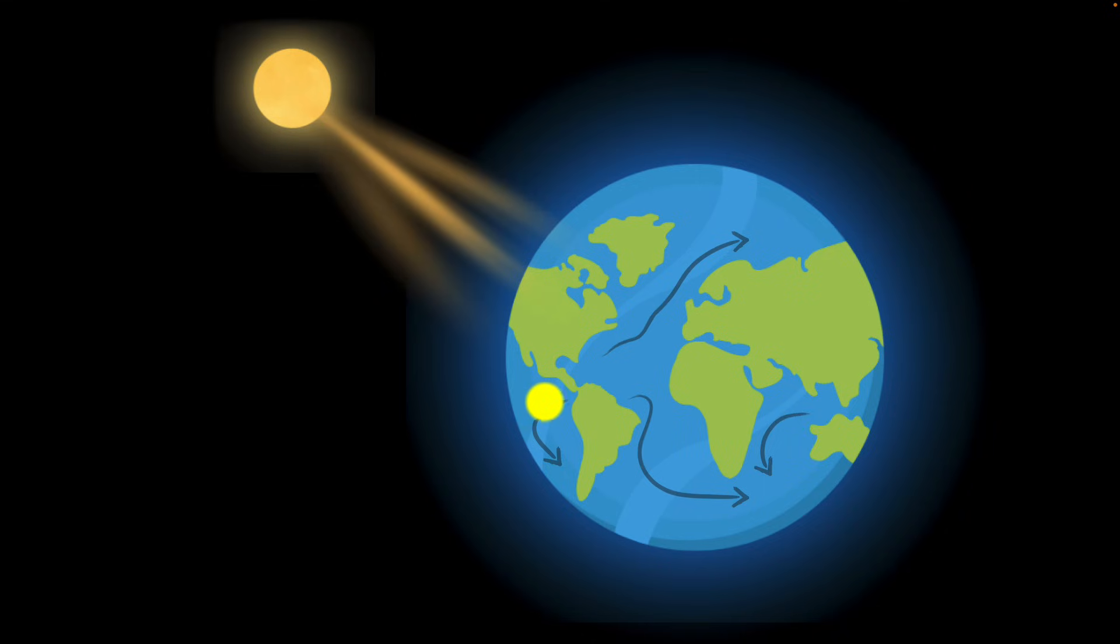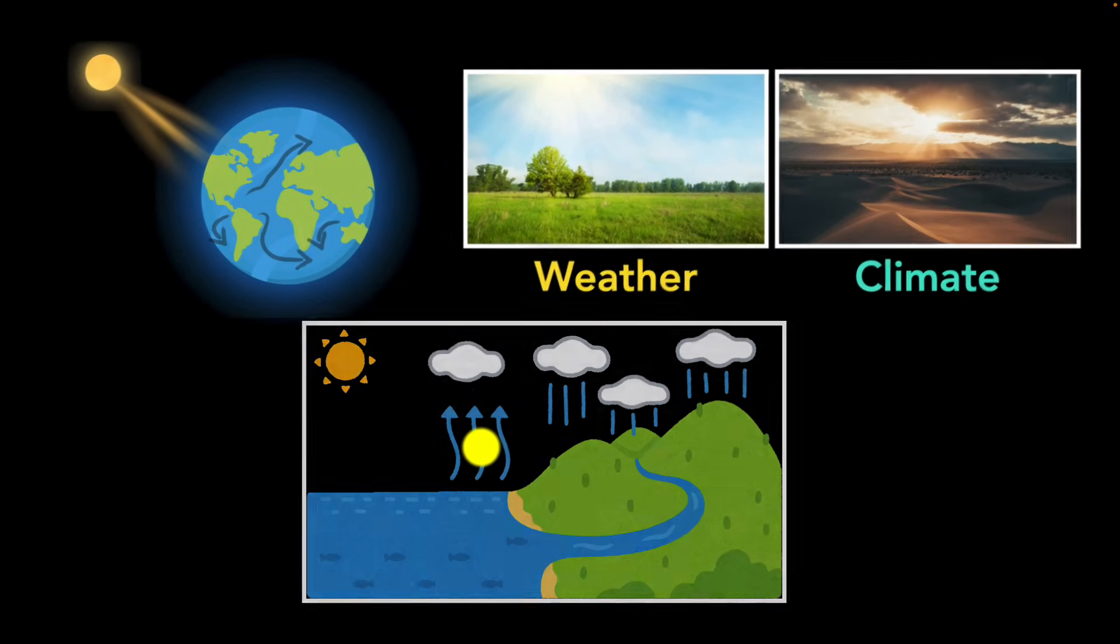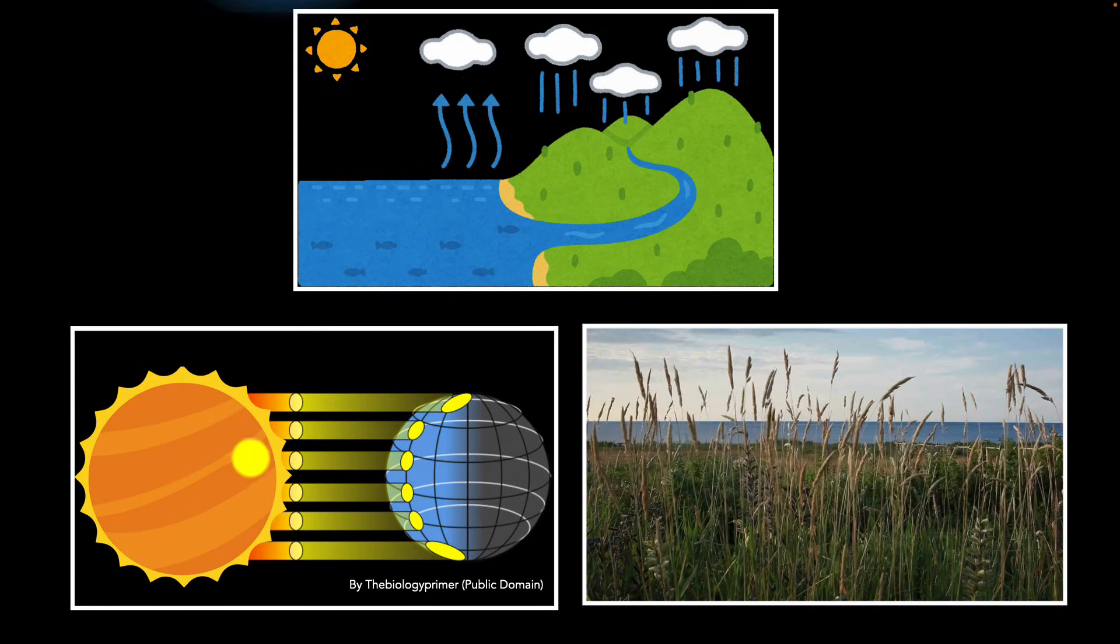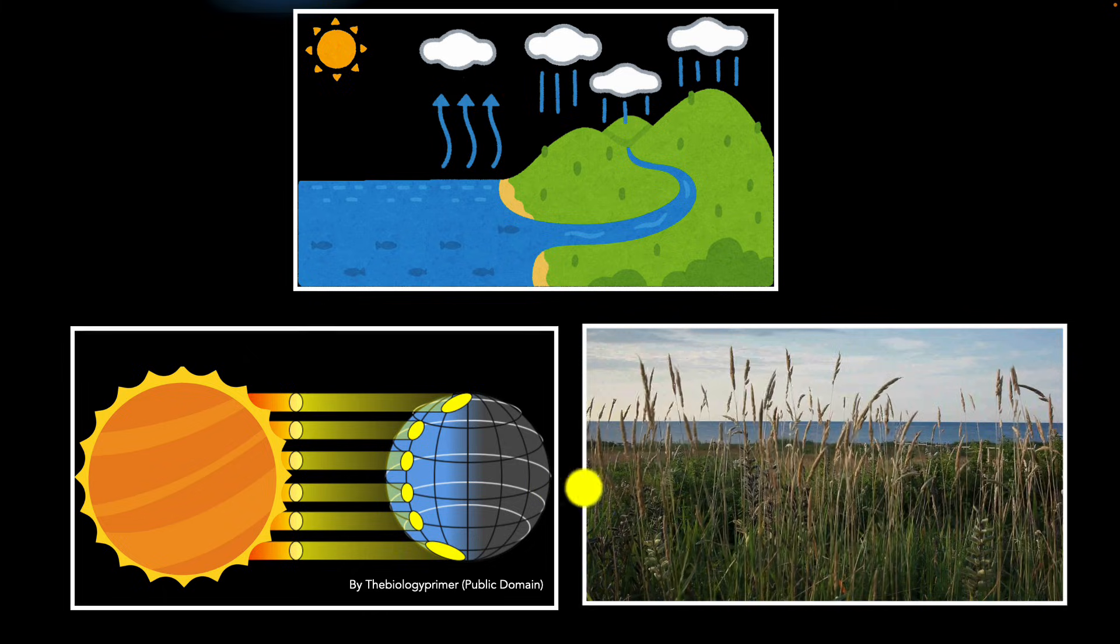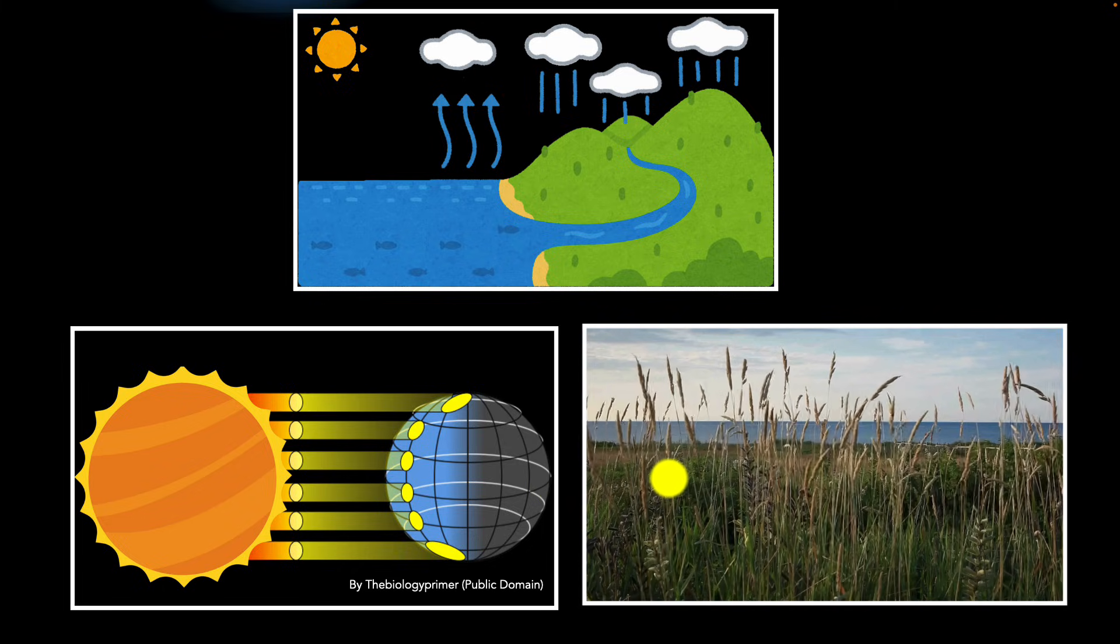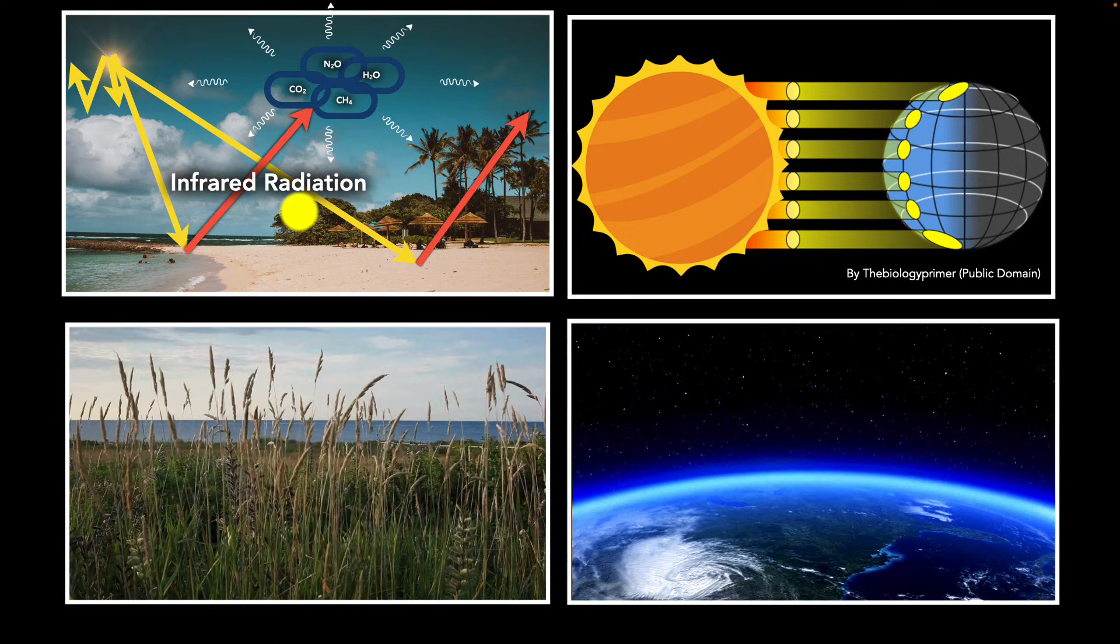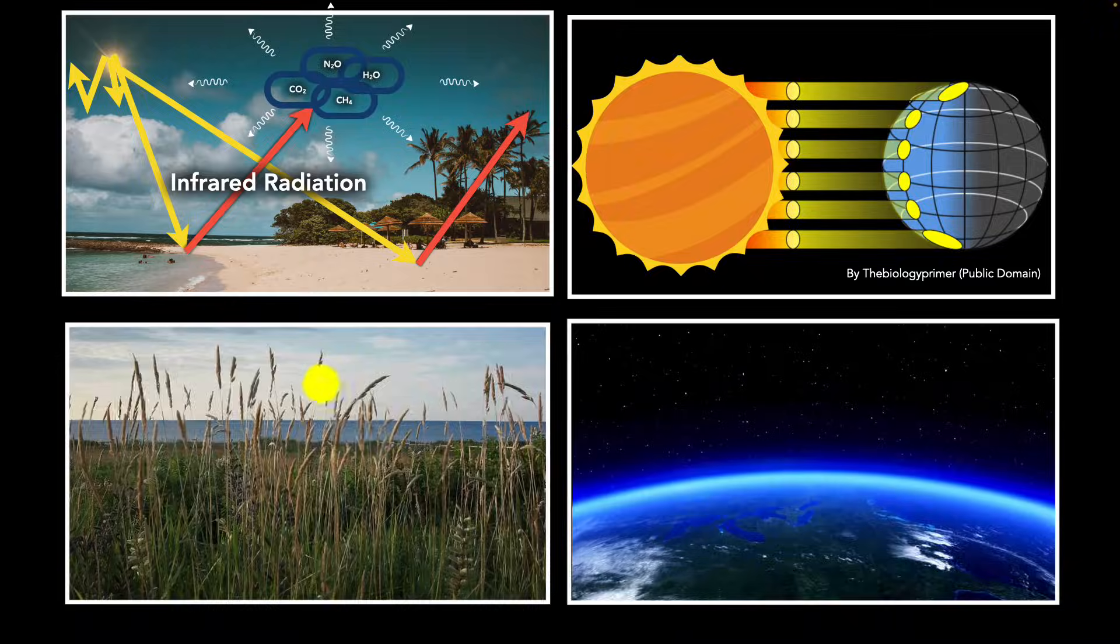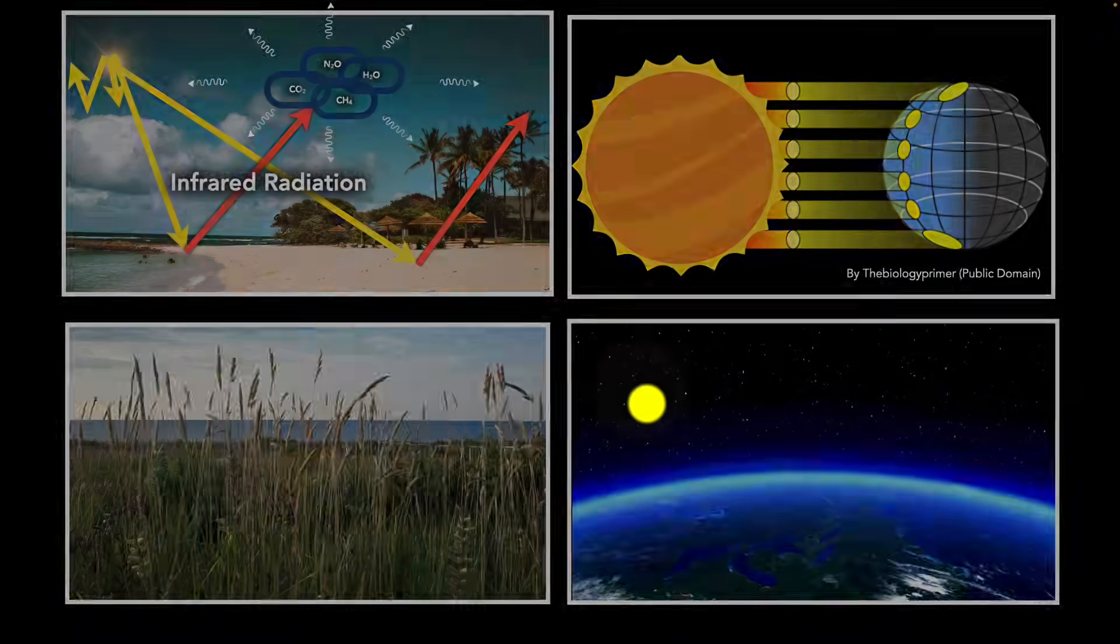Beautiful, right? So in summary, the sun is the main source of energy for Earth's weather and even climate. It's what sets the water cycle in motion. And because the sun doesn't heat all parts of the Earth equally, it causes changes in temperature and air pressure, leading to different weather patterns like wind and rain and storms. Finally, greenhouse gases can trap some of this heat, keeping the Earth warm enough for life. So everything from a gentle breeze to a thunderstorm starts with the sun.